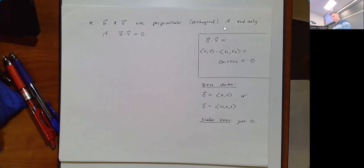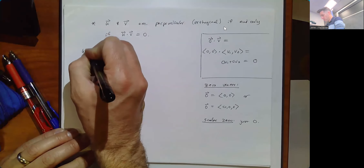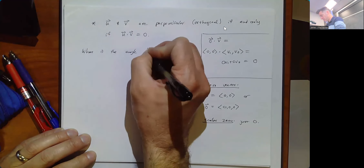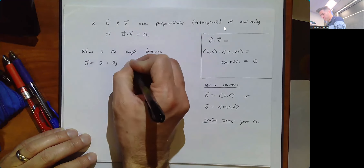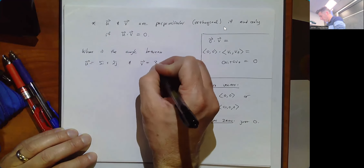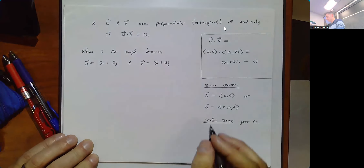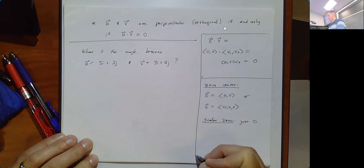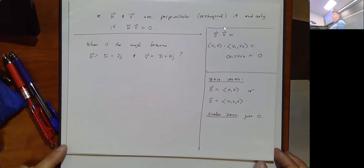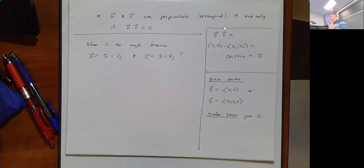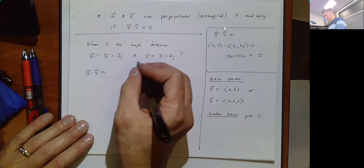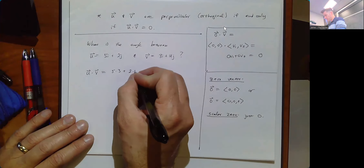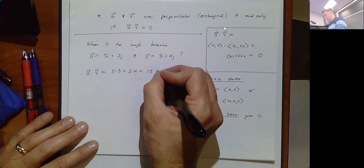A more interesting question: what is the angle between u = 5i + 2j and v = 3i + 4j? First, u · v = 5·3 + 2·4 = 15 + 8 = 23. Fun fact: 2·3 + 2³ + 3² = 23. Moving on — we also know u · v = |u||v|cosθ, so we need the magnitudes.